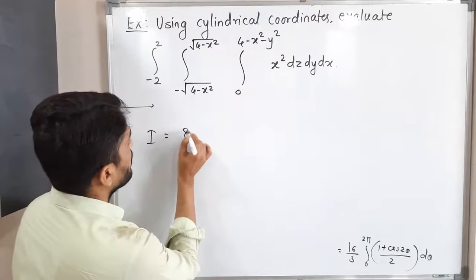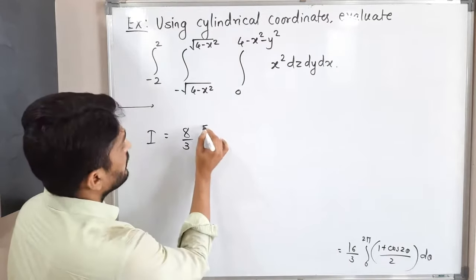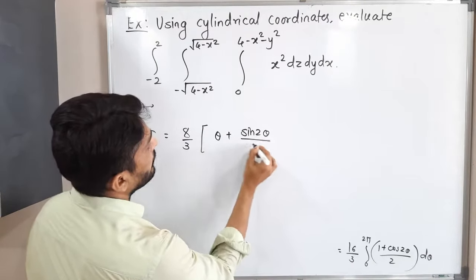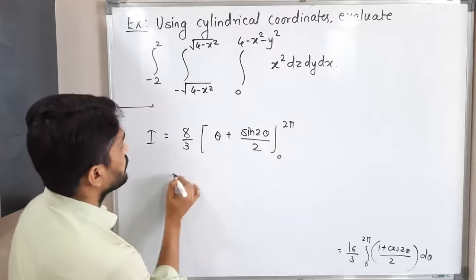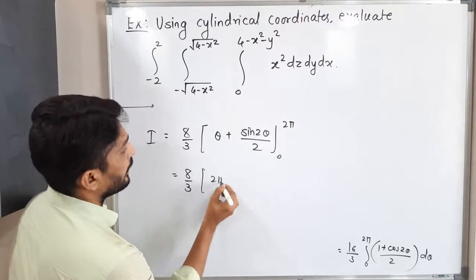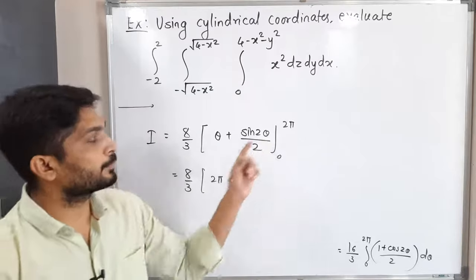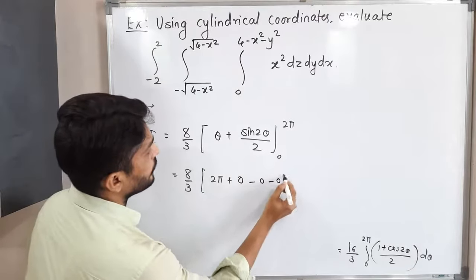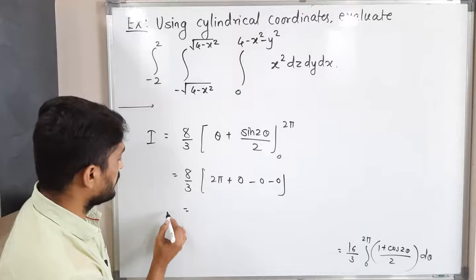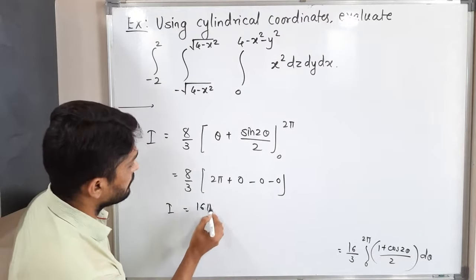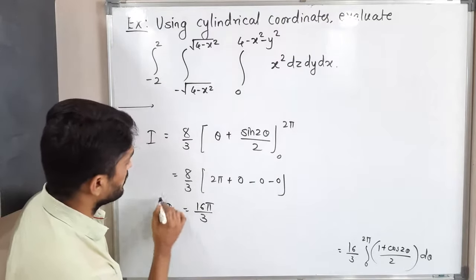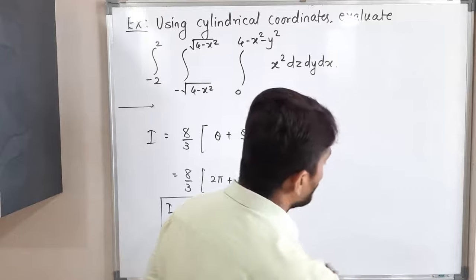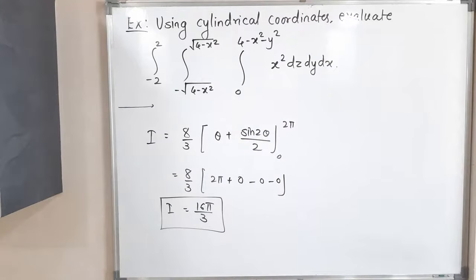Integrating: (8/3)·[θ + sin2θ/2]₀^{2π}. Putting the upper limit 2π: sin4π = 0, giving 2π. Putting lower limit 0: sin0 = 0, giving 0. So the result is (8/3)·2π = 16π/3. This is the required answer.